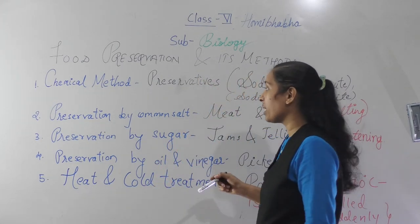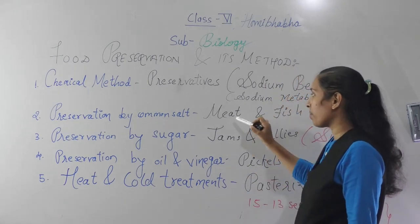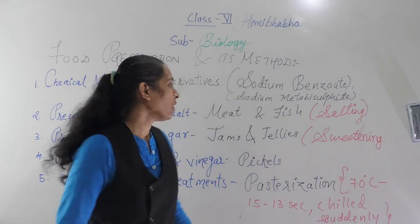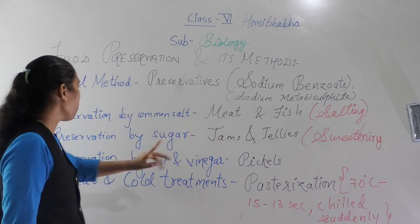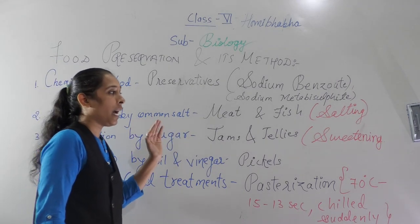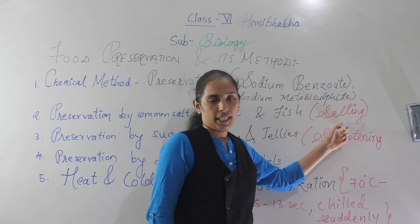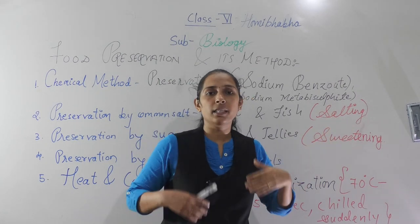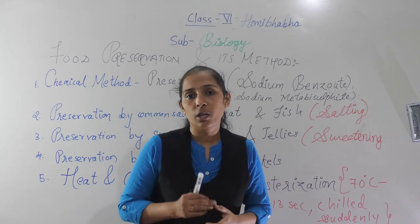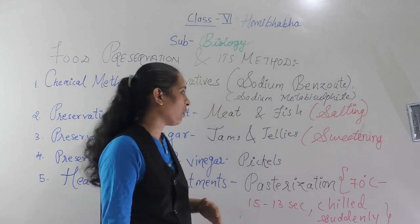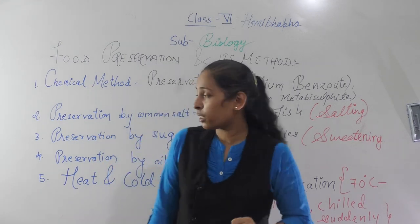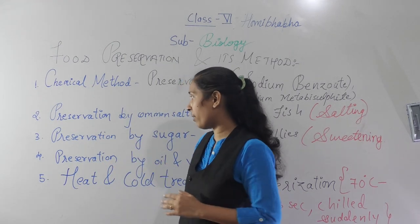First: preservation by common salt. To preserve food we use salt, so salt also acts as a preservative. The substances like meat and fish are preserved by adding salt. This method is also called salting — meaning adding an excessive amount of salt in the food material to keep it for a long period of time.